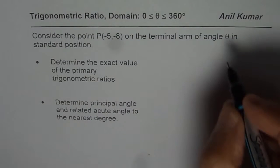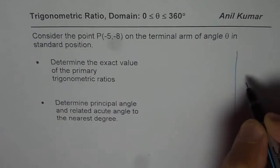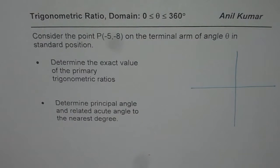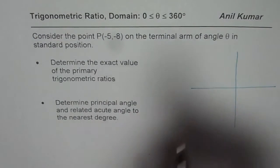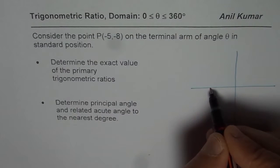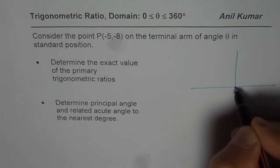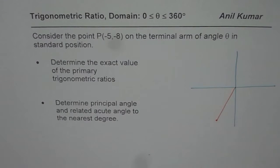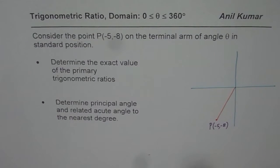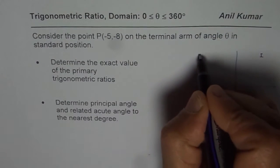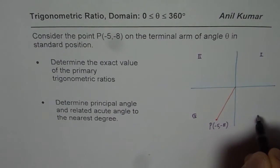Let us understand what we are trying to do here. We have a coordinate plane and we are given a point P which is (-5, -8). So, minus 5 along the x-axis and minus 8 along the y-axis — it could be something like this. So that is the point P given to us, and we are in quadrant 3. These are the quadrants: quadrant 1, quadrant 2, quadrant 3, and quadrant 4.